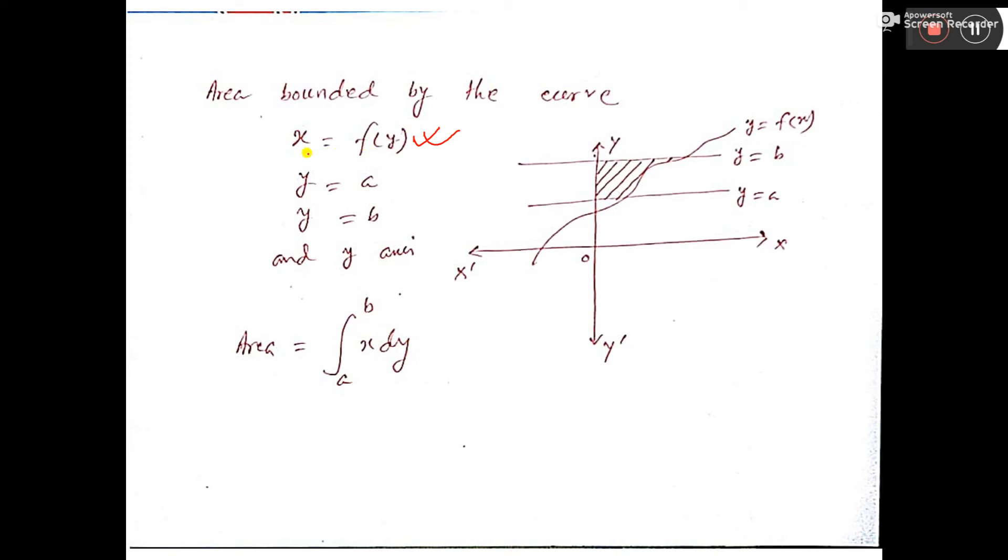And the line, this one is parallel to x-axis, that is y equal to a. This one that is parallel to x-axis, that is y equal to b I consider. And y-axis means this one and the function this one. So area bounded by these four lines, three are straight lines and one is curved line.